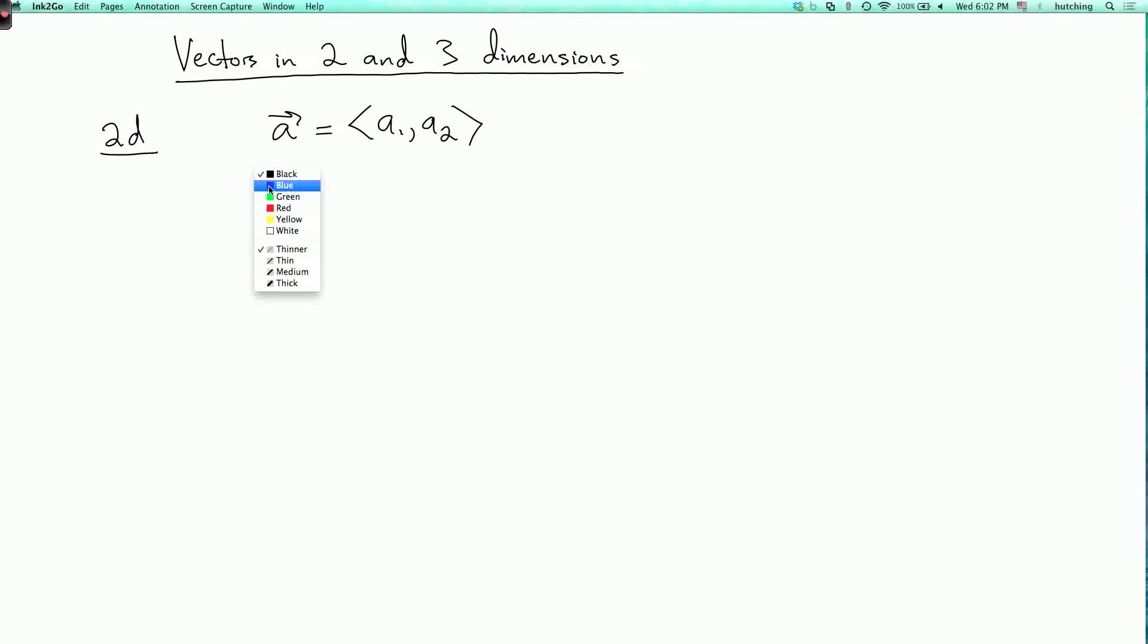So this letter A with the arrow on top of it is the vector. And these two numbers, A1 and A2, are called the components of the vector. And these components are real numbers.